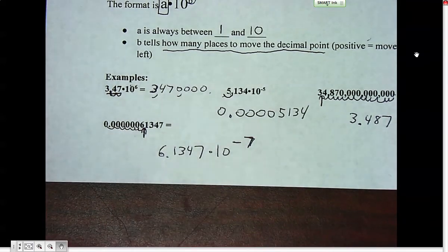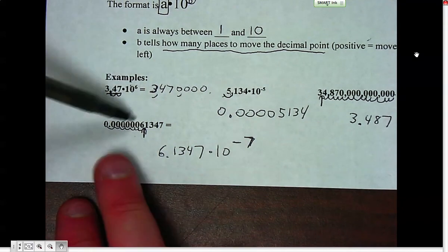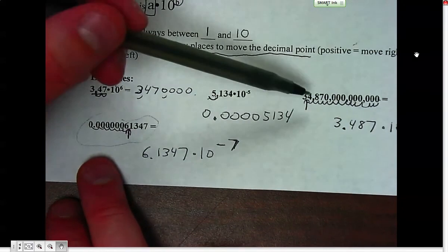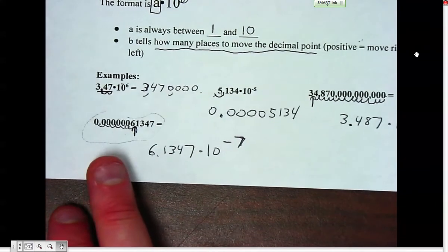Those are some examples of scientific notation—a more convenient way to write numbers that are really small or really big. It's more compact.